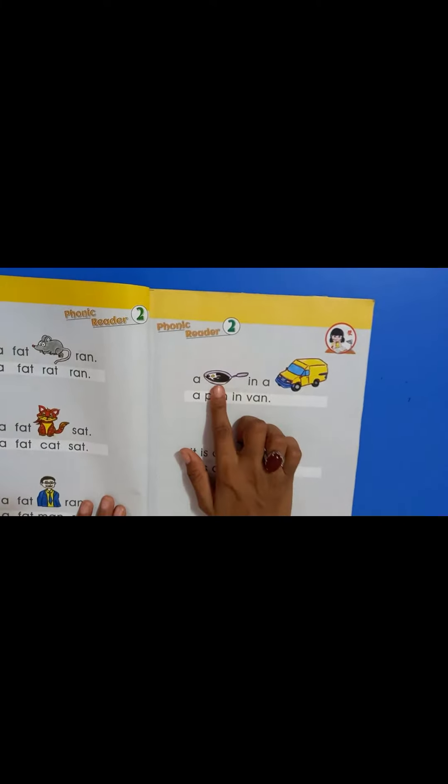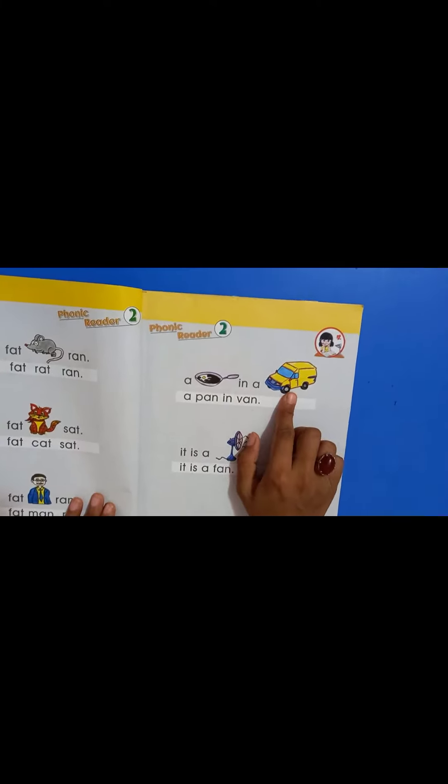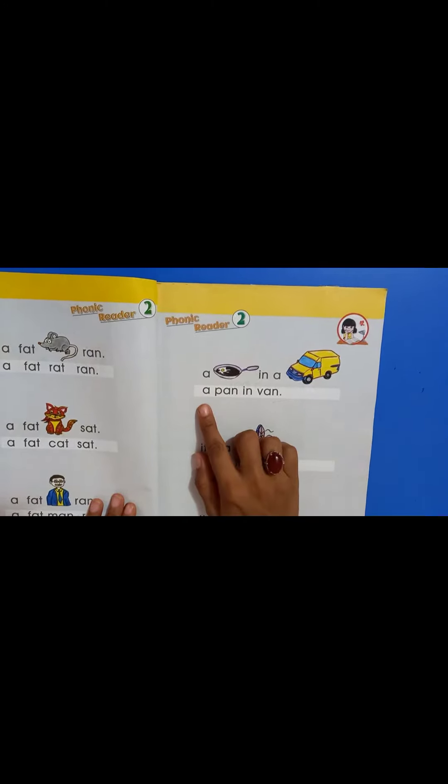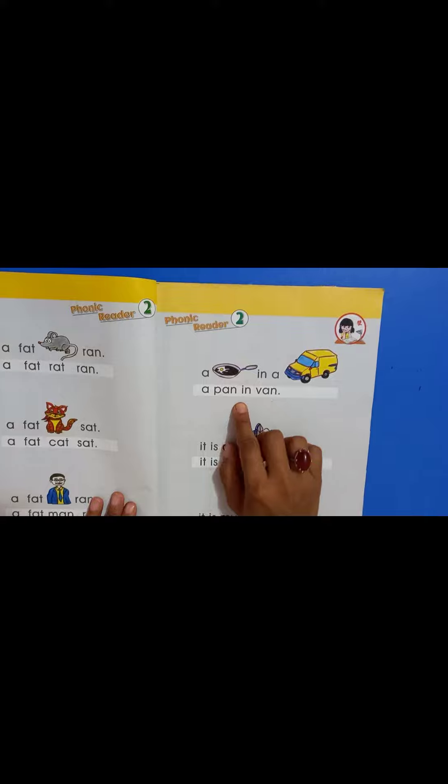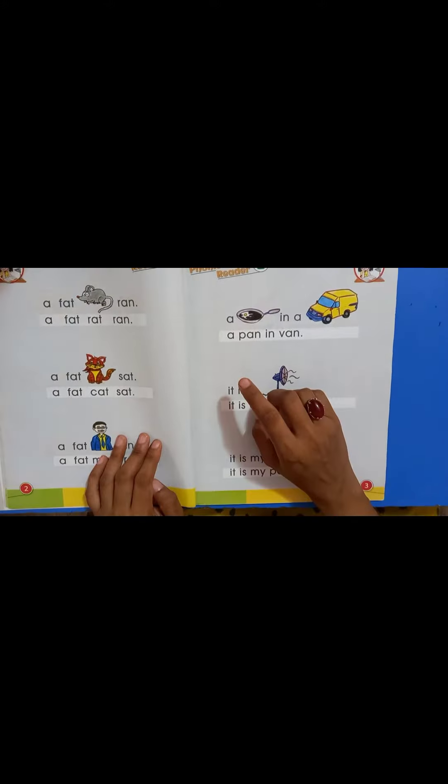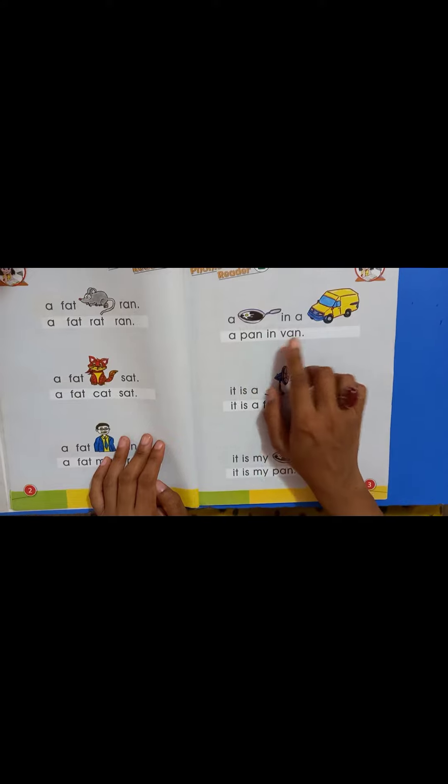Let's read. A pan and a van. Did you read it phonetically? A P and pan, an A and van. A pan, a pan and van.